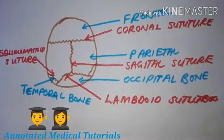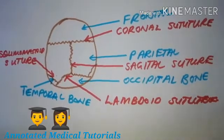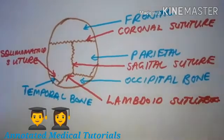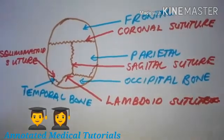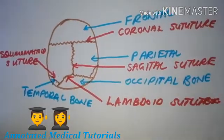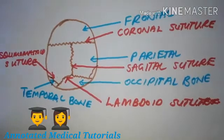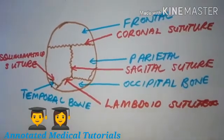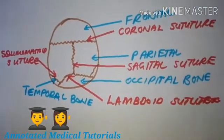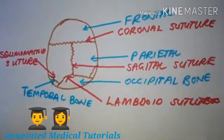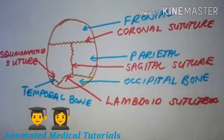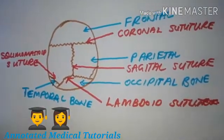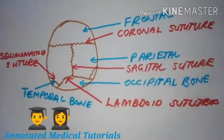There are many other sutures you can see in a human skull, but today we want to focus on the neonatal skull and how these sutures develop. We are now going to move to the neonatal skull and look at where the fontanels are found.